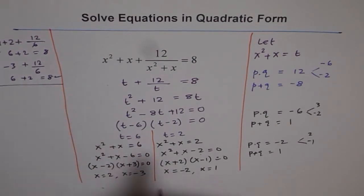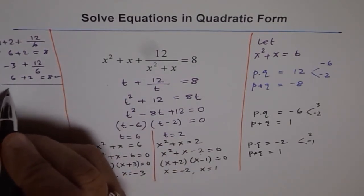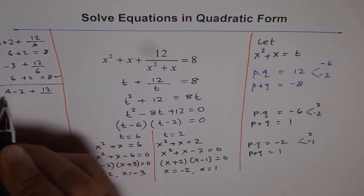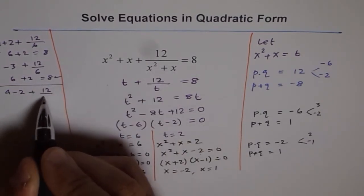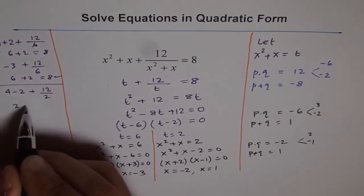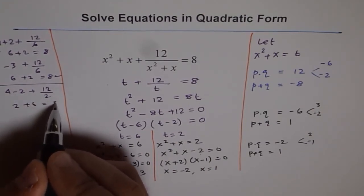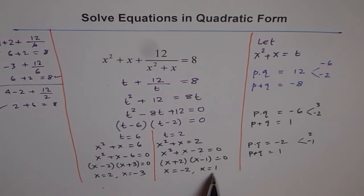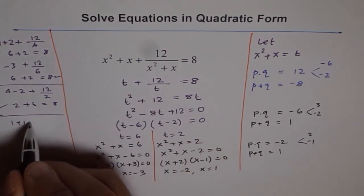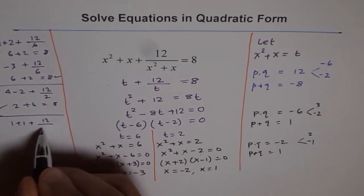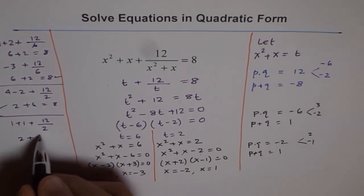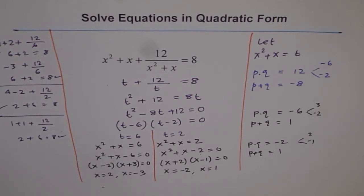For x equals 1: 1 plus 1 plus 12 over 1 plus 1 equals 2 plus 12 over 2, which is 2 plus 6, equals 8. All four solutions check out.